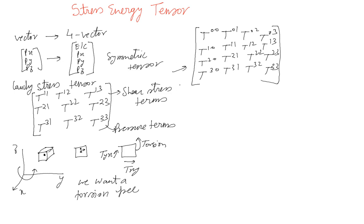In four dimensions, the rotation that mixes vector components is understood as a Lorentz transformation — the Lorentz transformation is essentially a rotation. So the four-momentum (E/c, px, py, pz) under a Lorentz transform will mix components: pressure can become shear and shear can become pressure, and momentum may start contributing to the energy term. The new components are a linear combination of the old ones, exactly as expected for a Lorentz transformation.